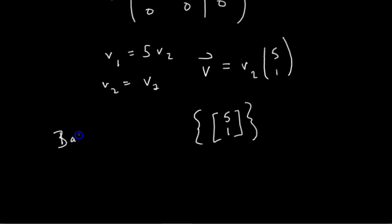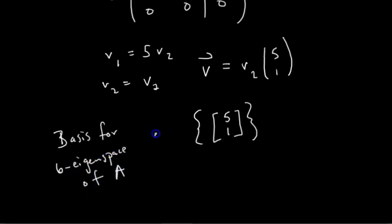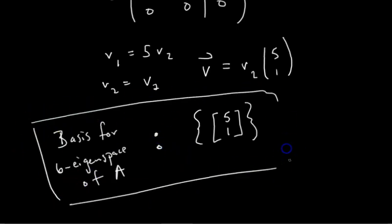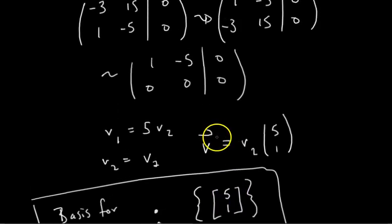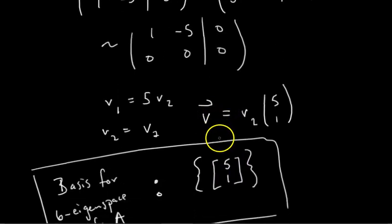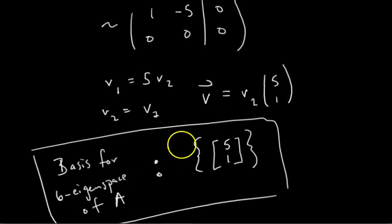A basis for the null space of A minus 6I₂ is a basis for the 6-eigenspace of A — that's critically important. So the basis for the 6-eigenspace of A is {[5, 1]}. The 6-eigenspace is a line passing through the vector [5, 1], meaning any scalar multiple of [5, 1] is an eigenvector of A with eigenvalue 6.